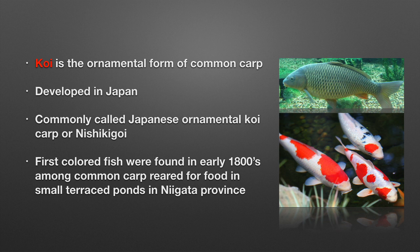Practically, koi are color mutants of common carp, and koi have been developed in Japan. It's interesting that the word 'koi' in Japanese means carp of any type — carp with wild color and also ornamental fancy carp. But for ornamental carp specifically, the correct Japanese term is 'nishikigoi,' which literally means 'brocaded carp.' When Japanese talk about color carp as we understand it, they use this word, nishikigoi.